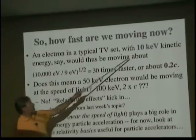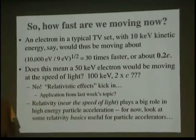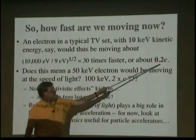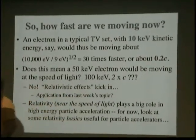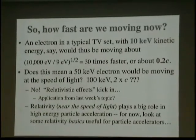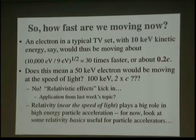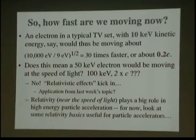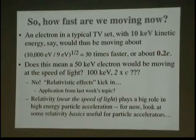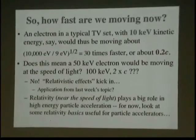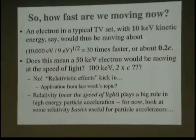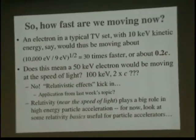If we .2c for 10 keV, so if we multiply this times 5 and have 50 kEV electrons, and we multiply that times 5, it doesn't mean 50 kEV electrons should be going at the speed of light. Yes? No? Maybe? No. I'm supposed to tell you? No. Something called relativity kicks in. And you should have heard about that last week, I hope. Yeah? Okay.